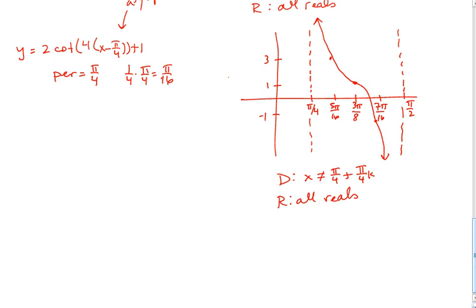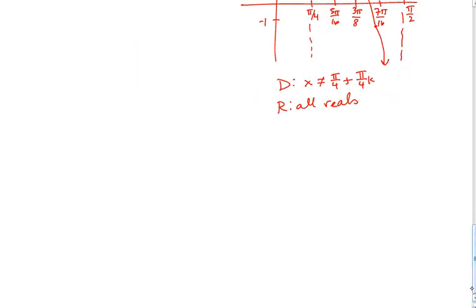So that's the cotangent. The other thing you need to be able to do is to come up with the equations for sine and cosine and secant and cosecant and tangent and cotangent. Let's try one.